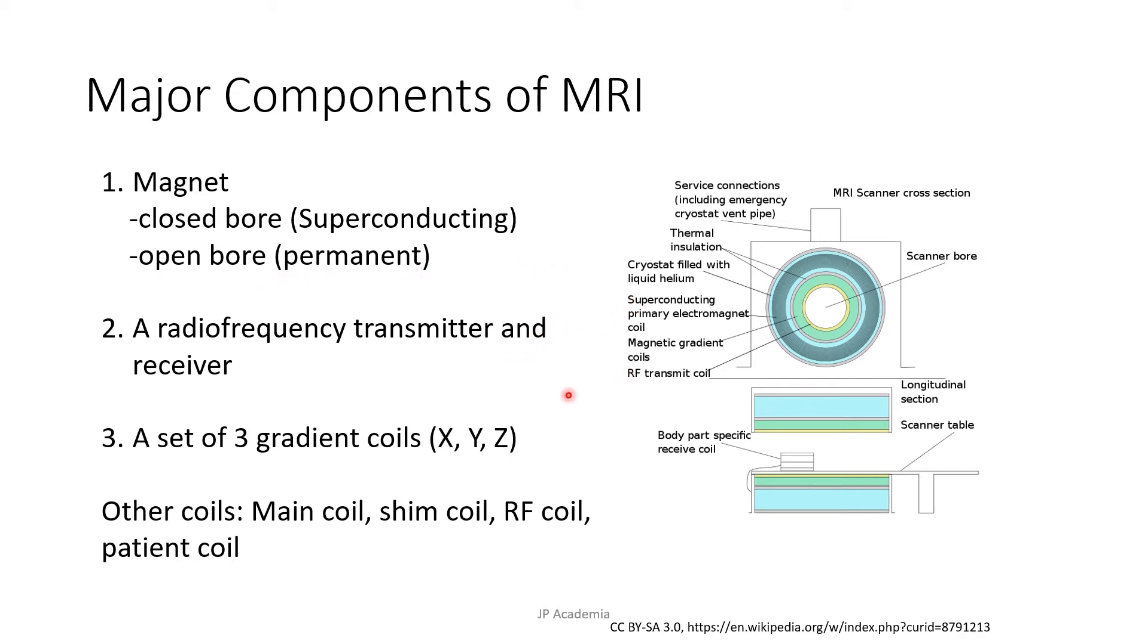There are different types of coils in MR. First, we have the main coil, which produces the B0 or the magnetic field. We have the shim coil, which improves the homogeneity of the magnetic field. We have the gradient coil, which is for imaging, and we have three gradient coils for this case.